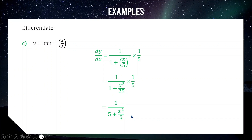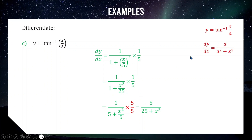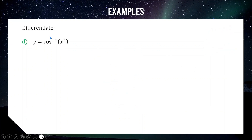We don't like fractions inside fractions, so we multiply numerator and denominator by 5: x squared over 5 becomes x squared, 5 becomes 25, and the top becomes 5, giving us 5 over 25 plus x squared. The shortcut to remember: if you have tan inverse of x over a, the derivative is a over a squared plus x squared. Not on the reference sheet, but highly recommended — it turns a two-minute question into a two-second one.